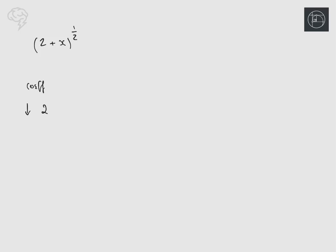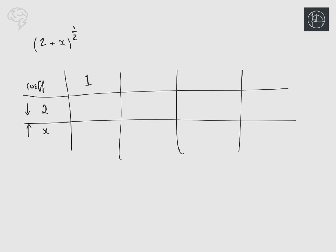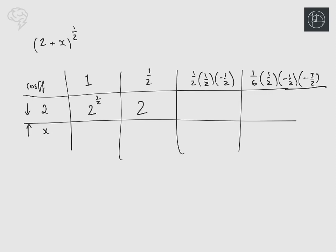Now let's do it with a fractional power: (2 + x)^(1/2). So we have our coefficient row, the thing going down in power is two, and the thing going up in power is x. We'll do four terms again. Multiply each column together to get your four terms.